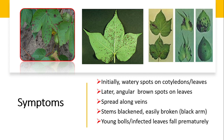As for the symptoms of this disease, initially watery spots appear on the cotyledons and leaves. These spots are angular in shape and turn brown in color, spreading along the veins. The stem is blackened and easily broken, and the young bolls are also infected.